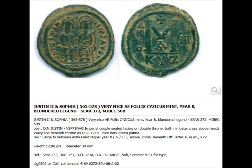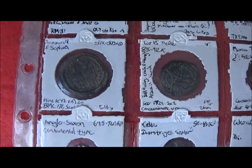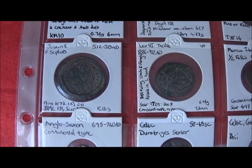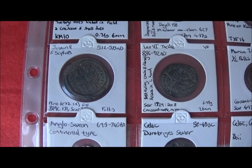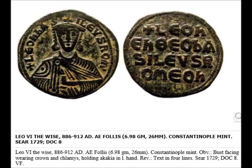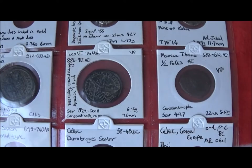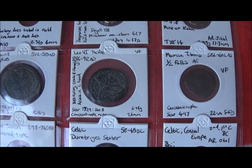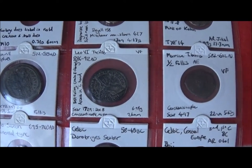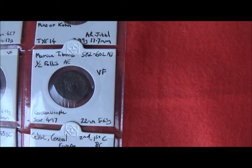The large follis is of Justin and Sophia. Another follis, this time from Leo the Wise, has a nice dark color and contrast to it. These were produced in the ninth century. Finally, my third Byzantine coin is from Moris Tiberius.